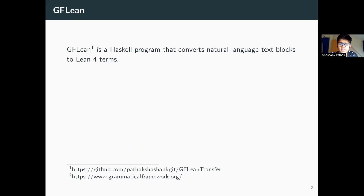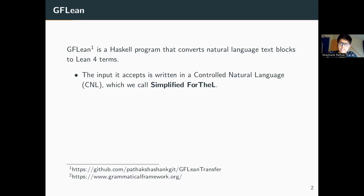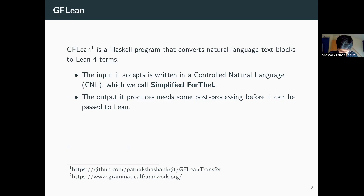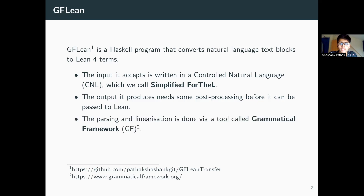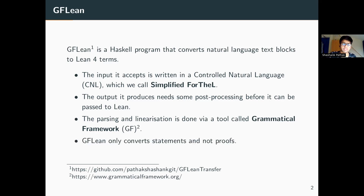GFLean is a Haskell program that converts natural language text blocks to Lean terms, and the input that GFLean accepts is written in a controlled natural language called Simplified FODL. The output that it produces needs to be post-processed before it can be passed on to Lean. GFLean uses a tool called Grammatical Framework for parsing the input and linearizing the output, and GFLean only works with statements and not proofs.